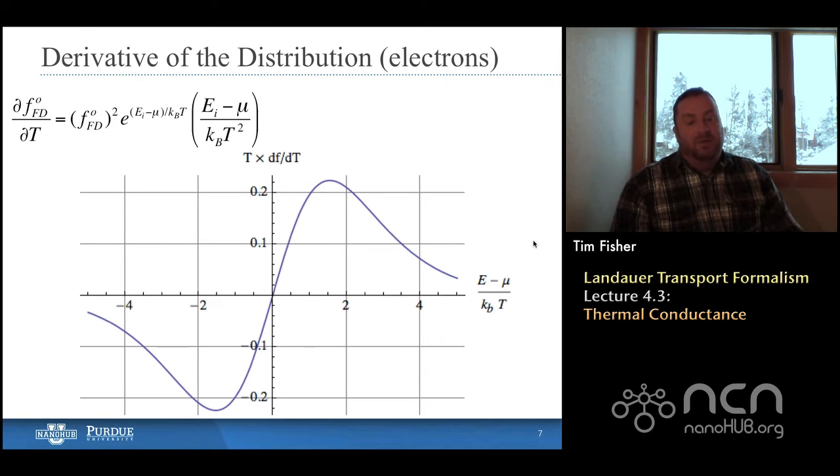Now, if you're worried that we're going to start having negative heat flows and maybe violating the second law of thermodynamics, don't worry. Most of the time, if not always, this term is multiplied in the rest of the integral with E minus mu. So that negative part of this derivative actually comes back and becomes positive once it's multiplied by E minus mu because it's only negative when E minus mu is negative.